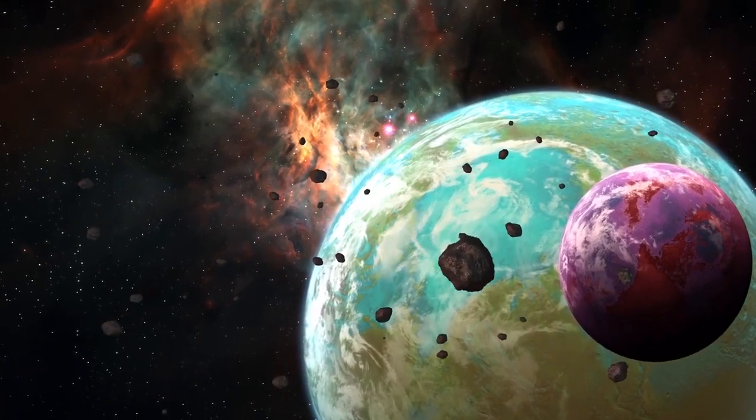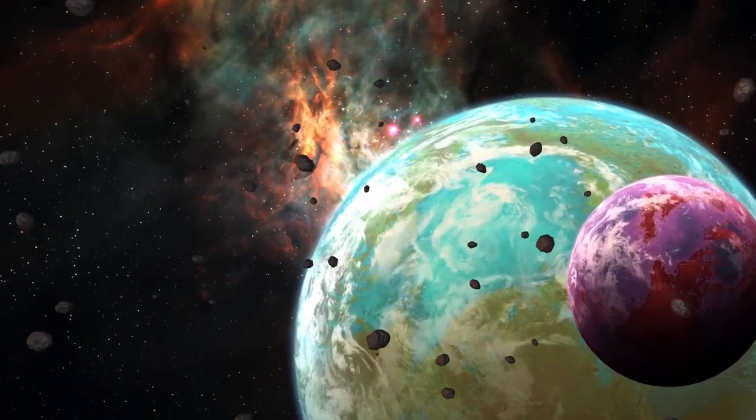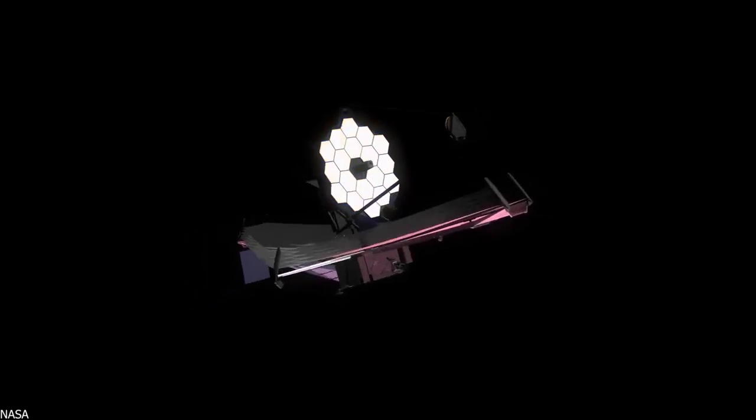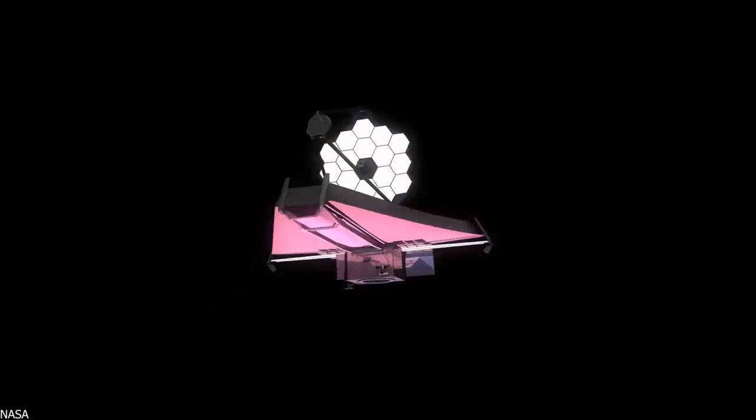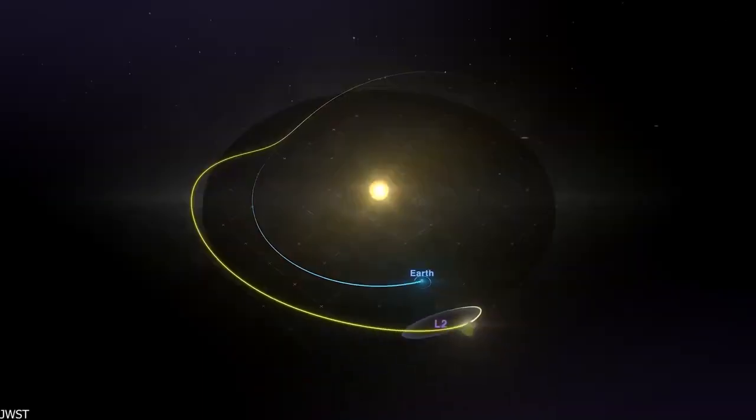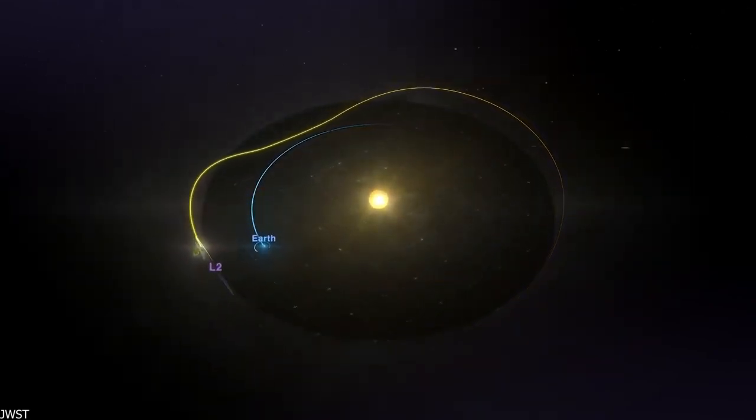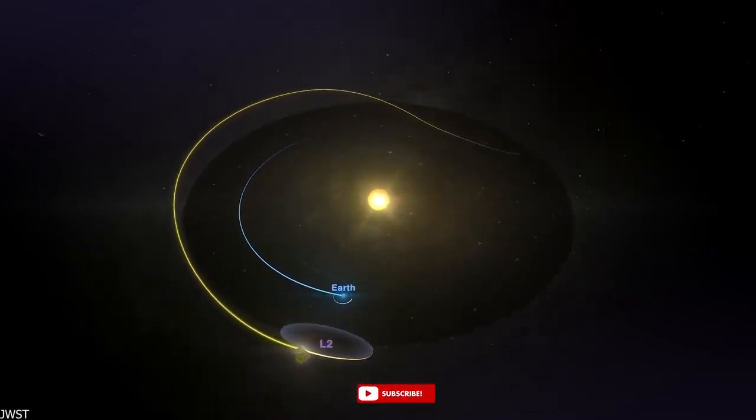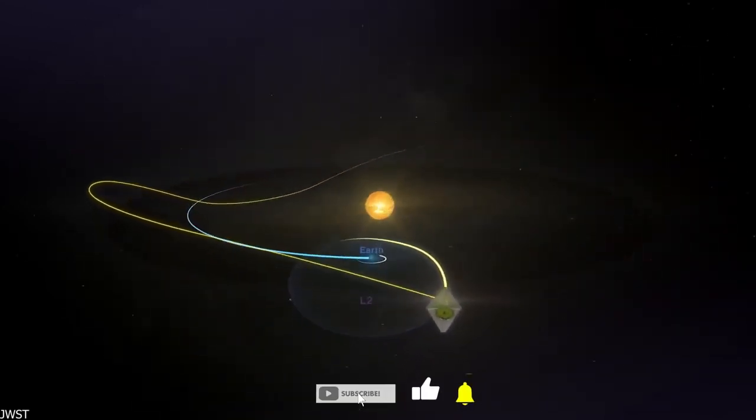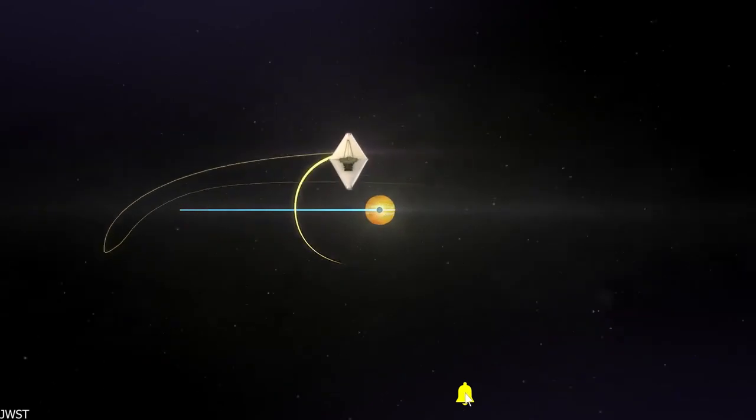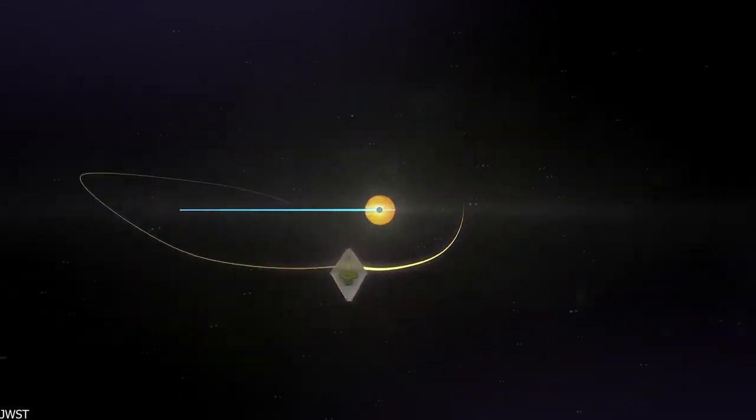The JWST is a large infrared-optimized space telescope near Earth's Lagrange Point 2, or L2. This means that this space telescope does not orbit the Earth. Instead, it orbits the Sun at a distance of nearly 1.5 million kilometers, or 1 million miles from Earth. That's almost four times further away than our Moon.